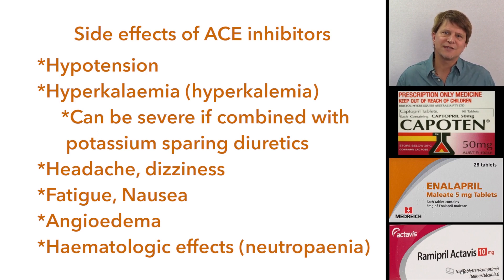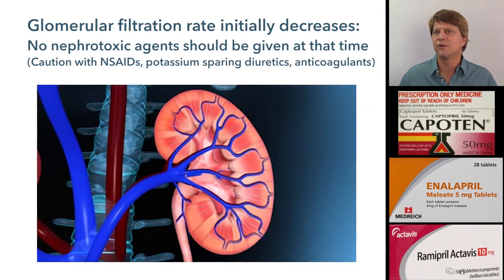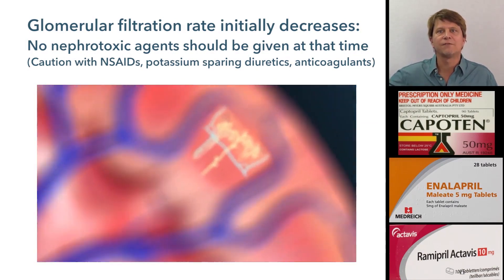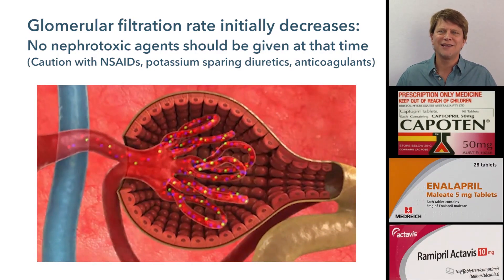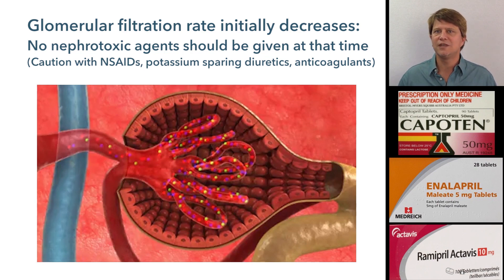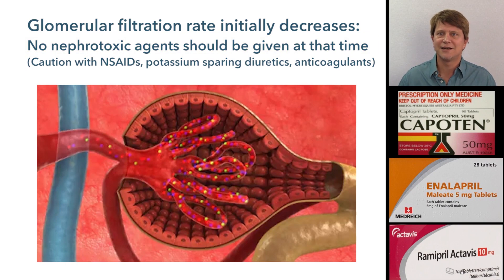Another thing that occurs is that people who are starting to take ACE inhibitors will actually have a decrease in glomerular filtration rate in the first few days, and then it levels off. It's important that during those first few days, while the body is getting used to the ACE inhibitors, the person does not take other drugs that may be damaging to the kidneys. Aspirin and non-steroidal anti-inflammatory drugs decrease protective prostaglandins in the kidneys and therefore should be avoided in those first few days.